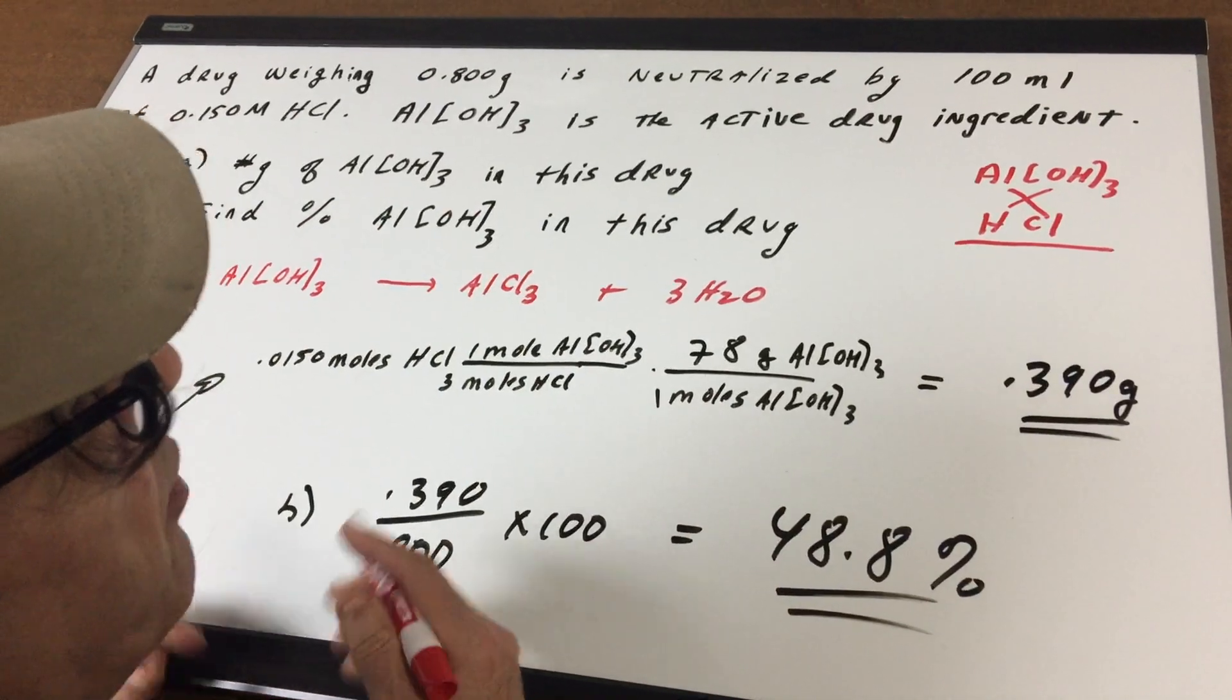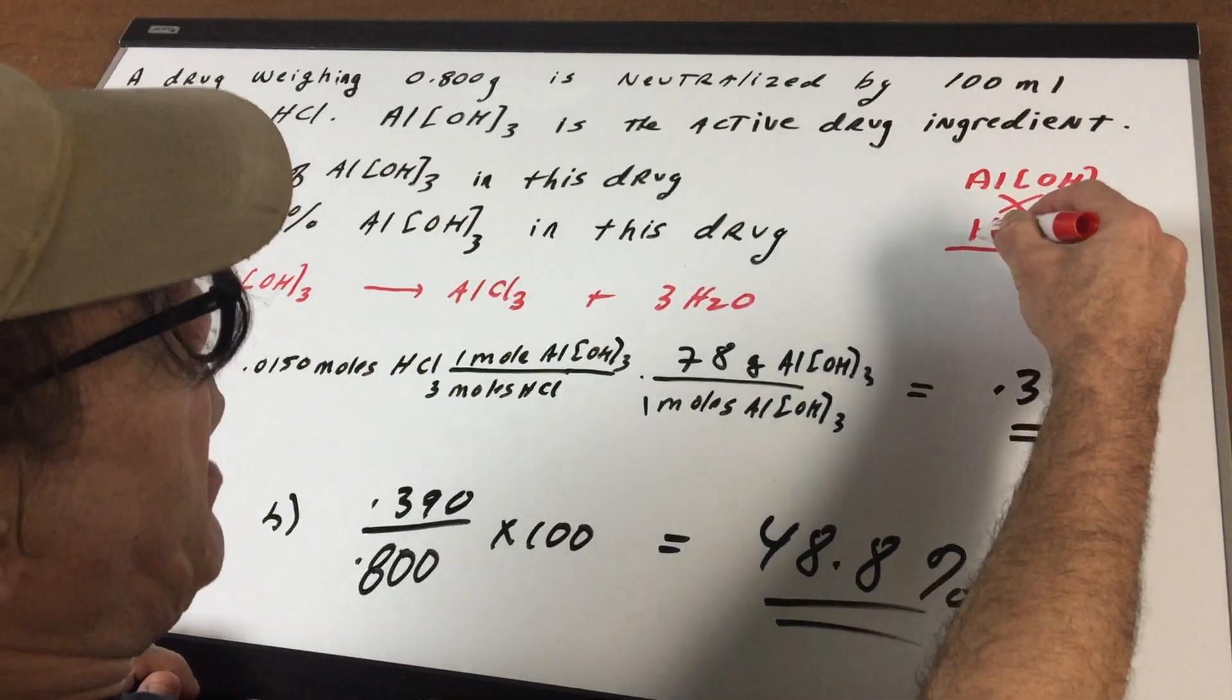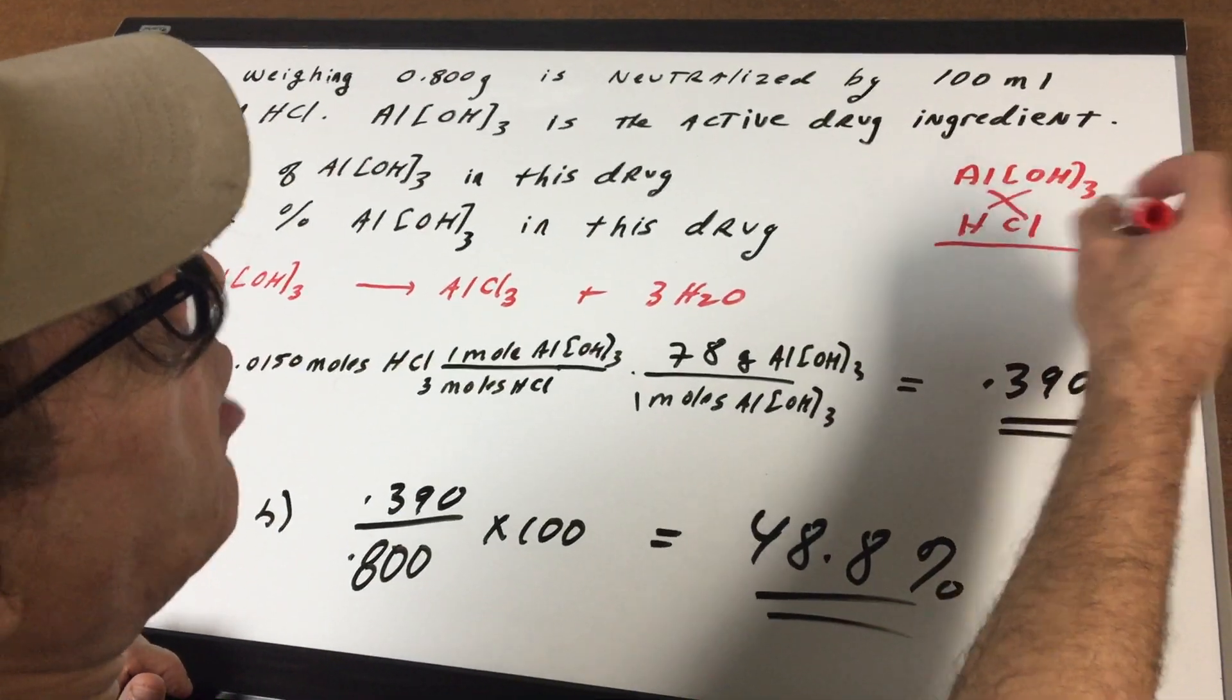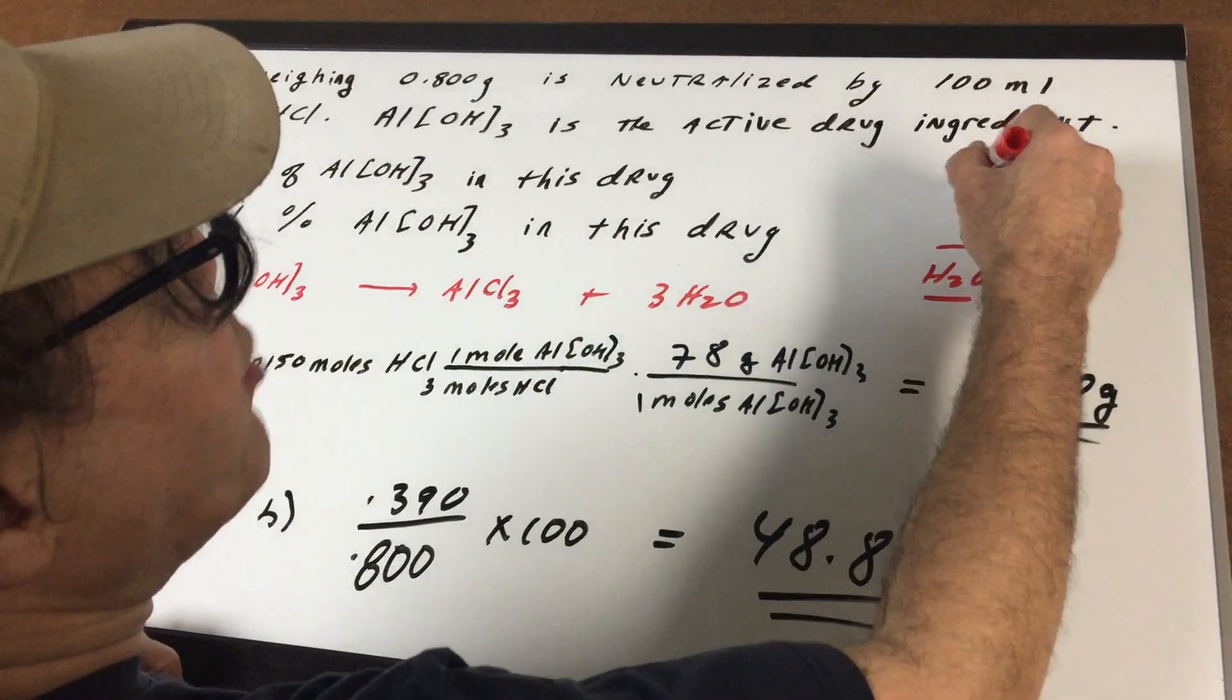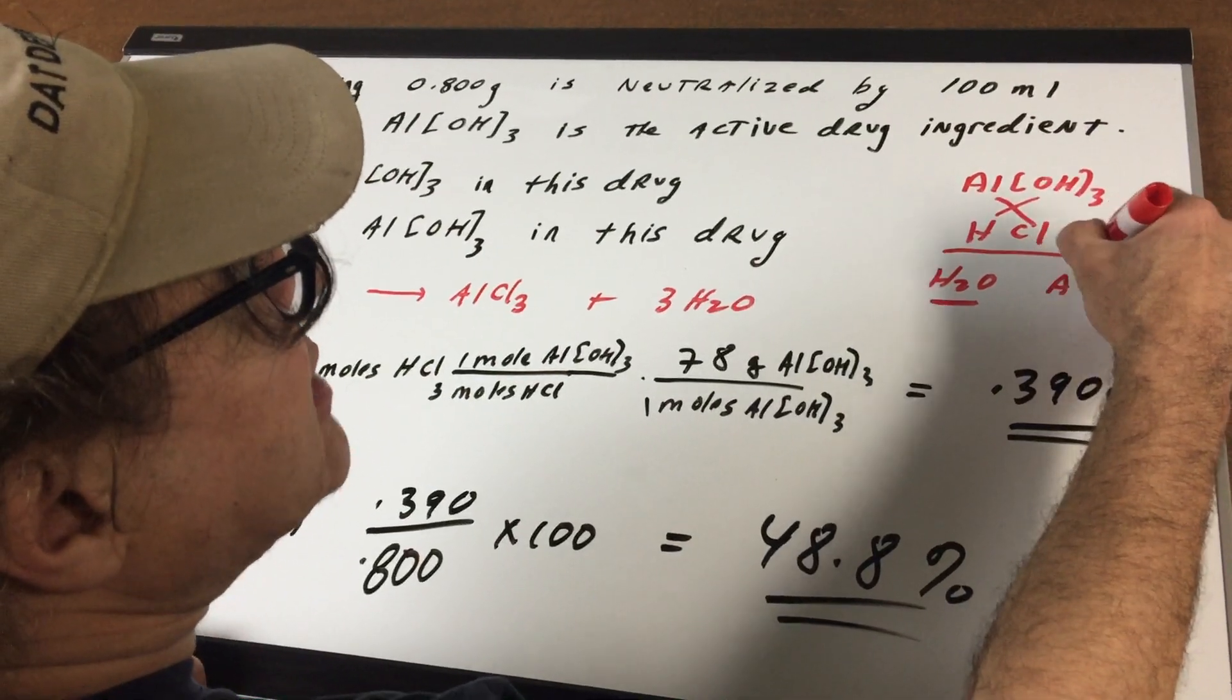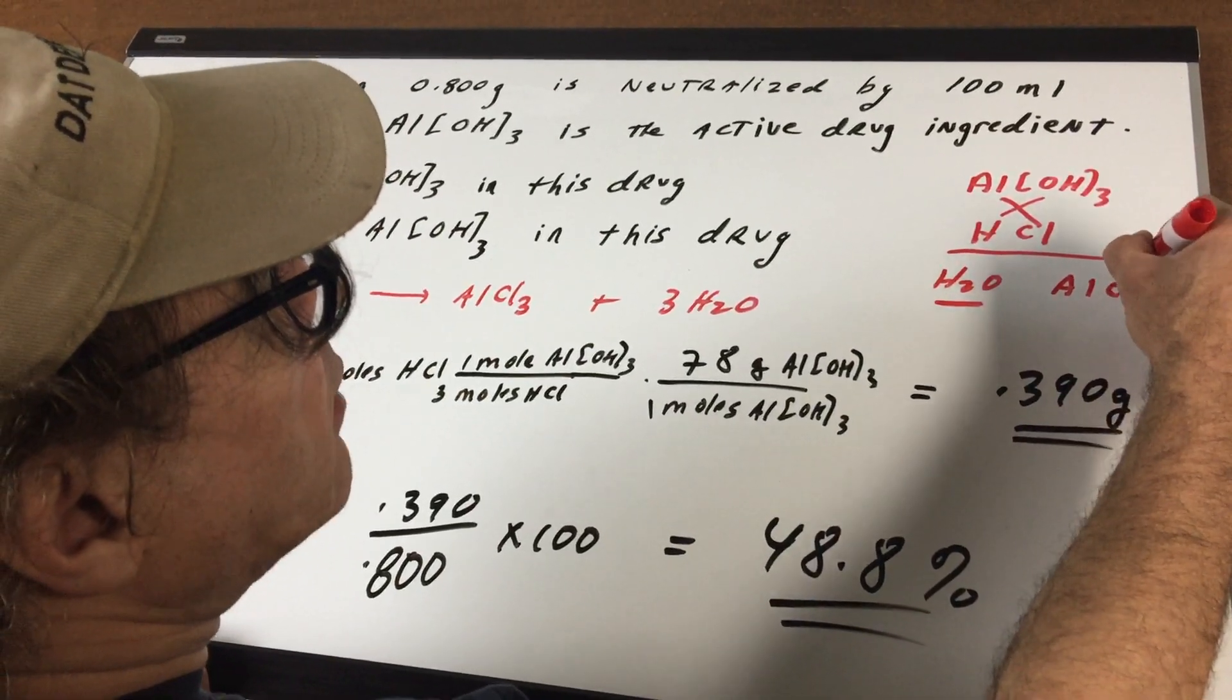This is a nice easy way to get the products. Anytime you cross an HOH combination, that's automatically water. So that's money in the bank. When you crisscross the Al and the Cl, you get AlCl.